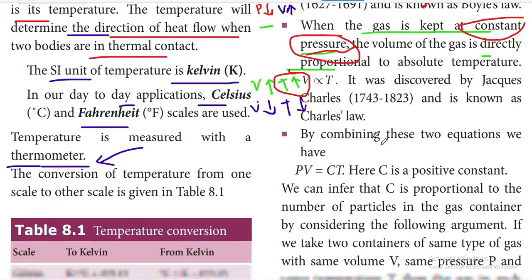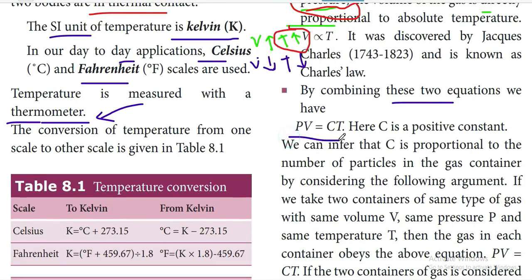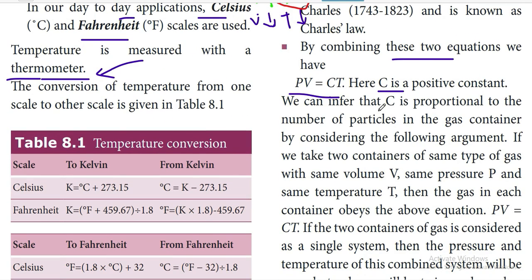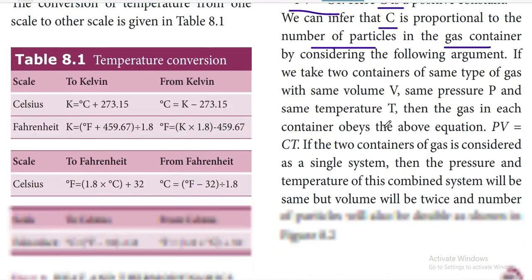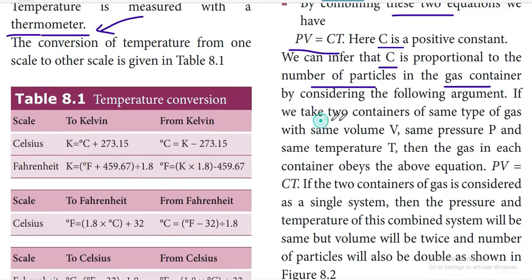By combining these two equations we have PV equal to CT, where C is a positive constant. We can infer that C is proportional to the number of particles in the gas container. C is a positive constant and is proportional to the number of particles.